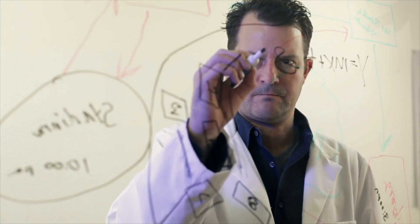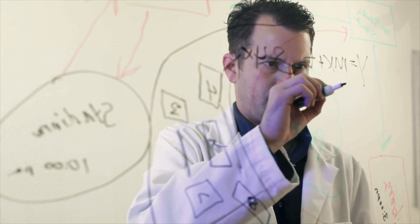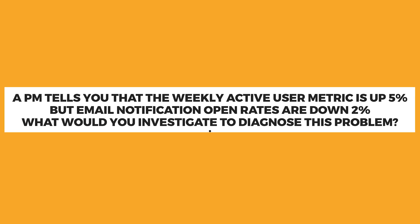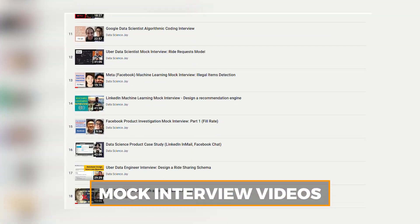If there's no difference across device types, you know to investigate something else. A much harder version, usually for product managers or experienced data scientists, involves two metrics moving in different directions: a PM tells you weekly active users are up 5% but email notification open rates are down 2% — what would you investigate? Check out the product metrics course on Interview Query or the mock interview videos for more.